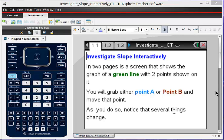Here we're going to investigate slope interactively on the TI-Inspire CX. In two pages there's a screen that shows the graph of a green line with two points shown on it. You'll grab either point A or point B and move the point, and as you do so, notice that several things change.